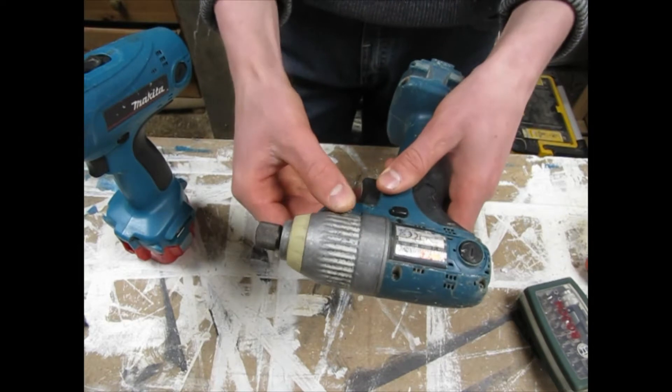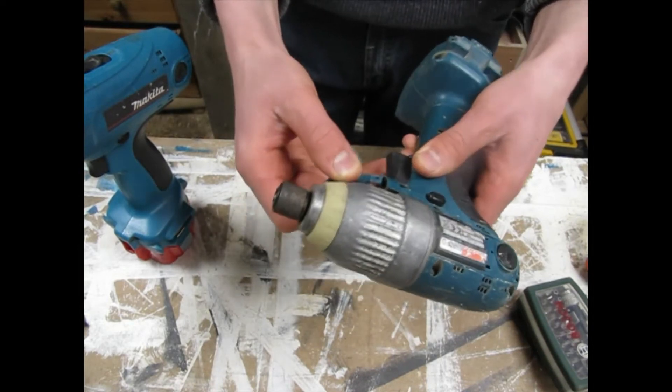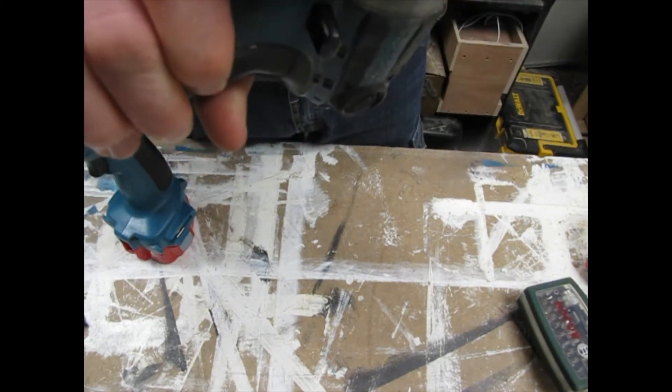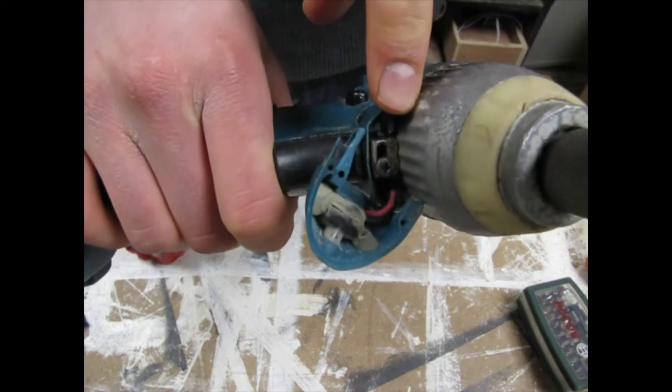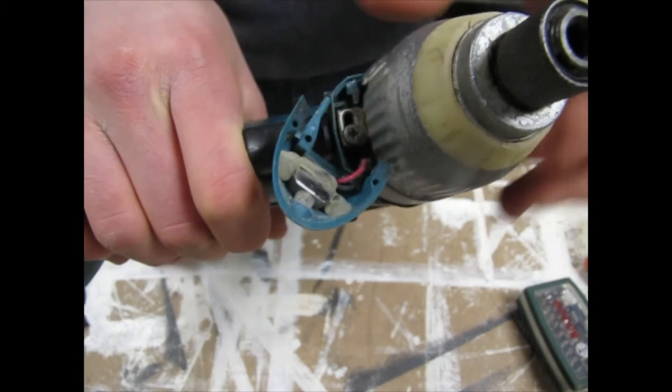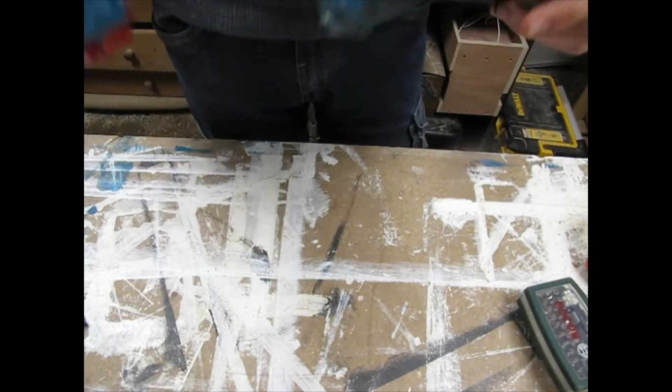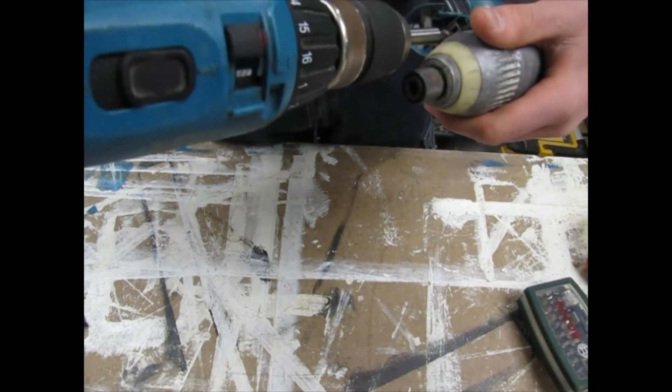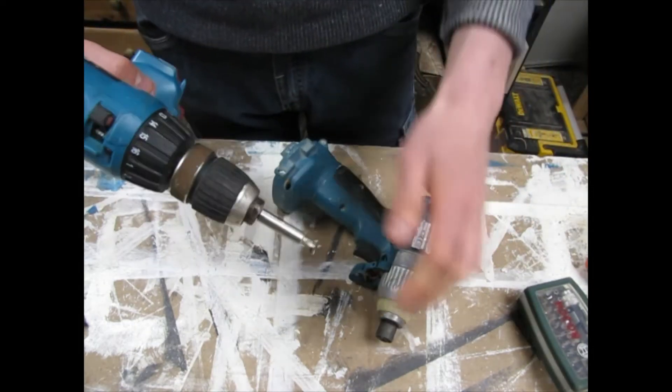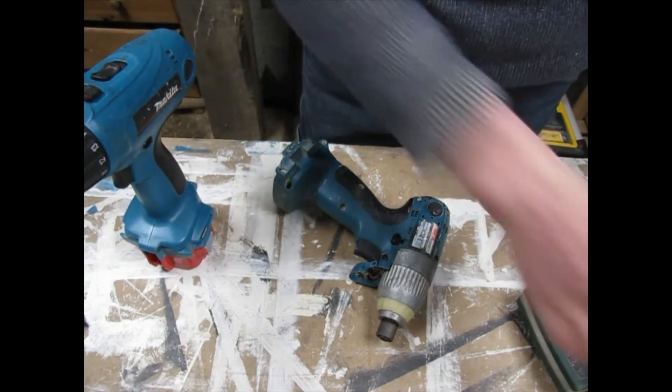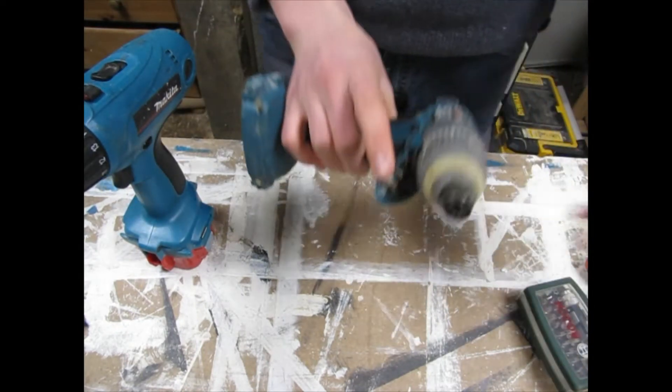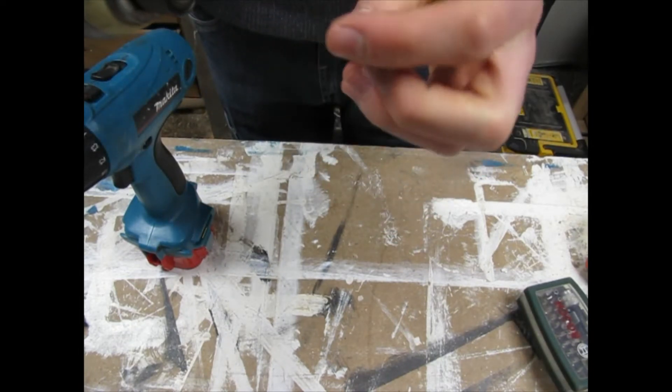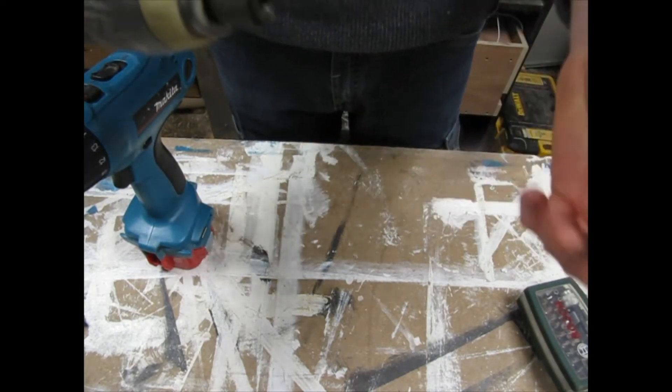So just pull that out. That's the LED in there. You have to pull that screw out. And then that piece has to come out. That's the brake.